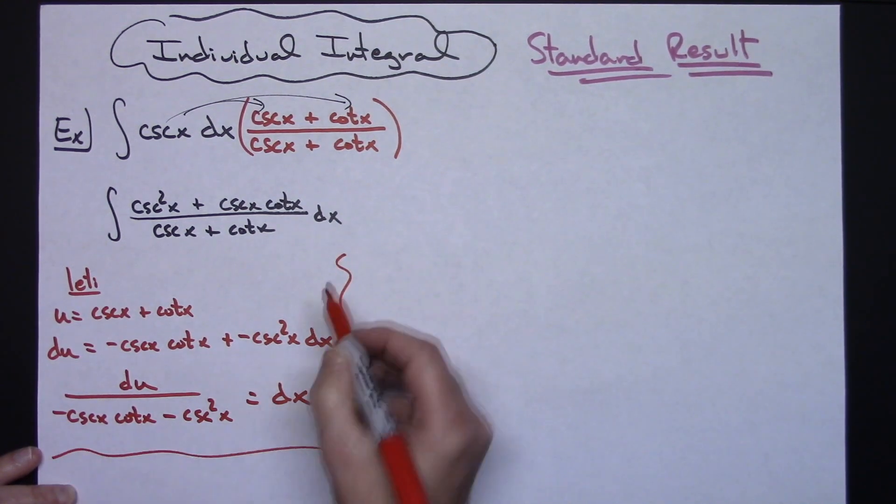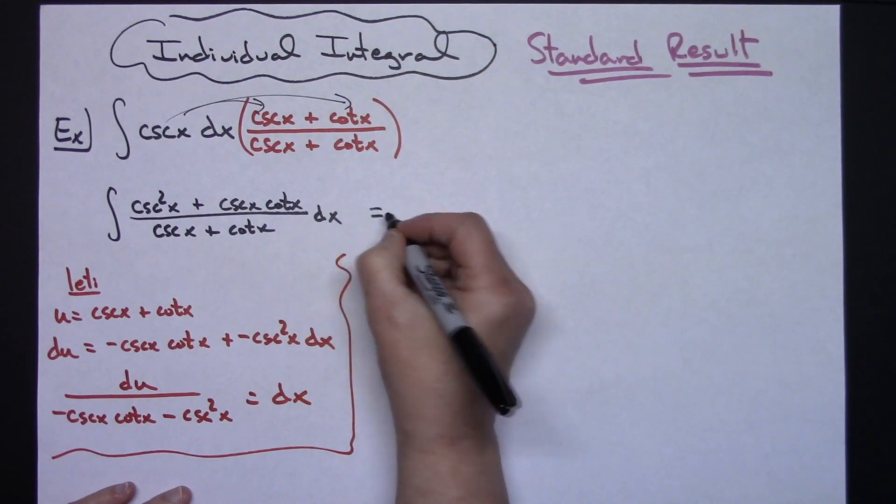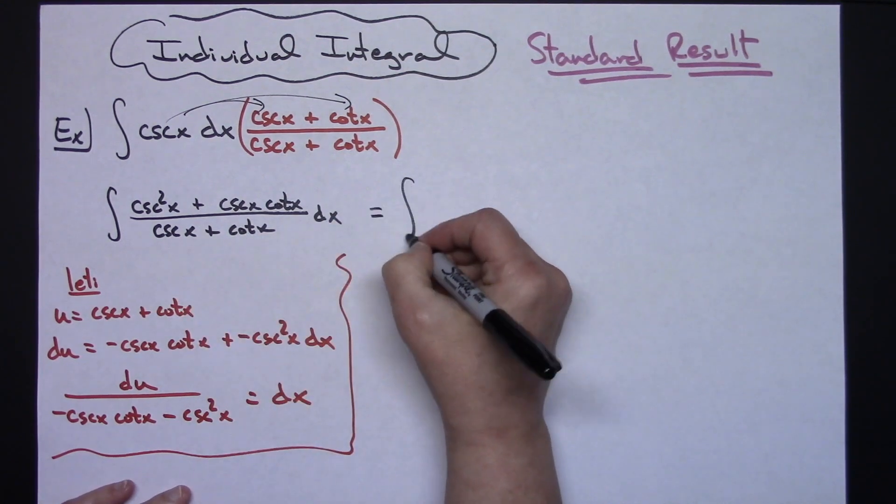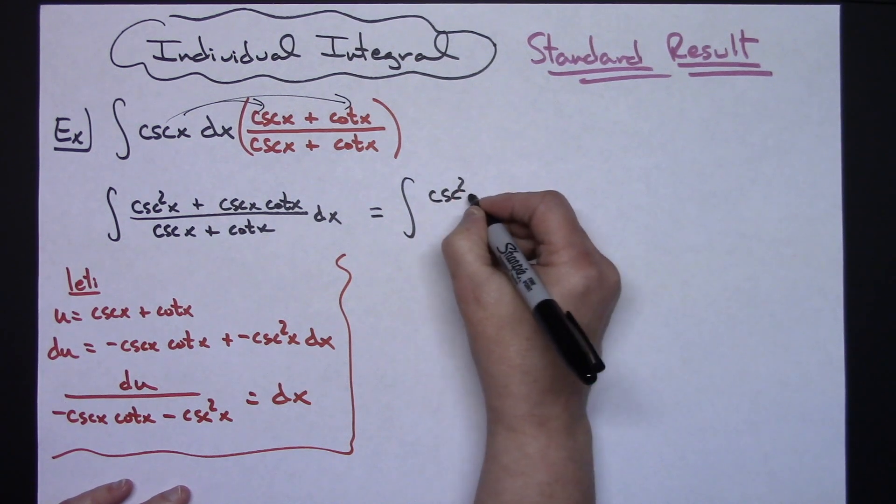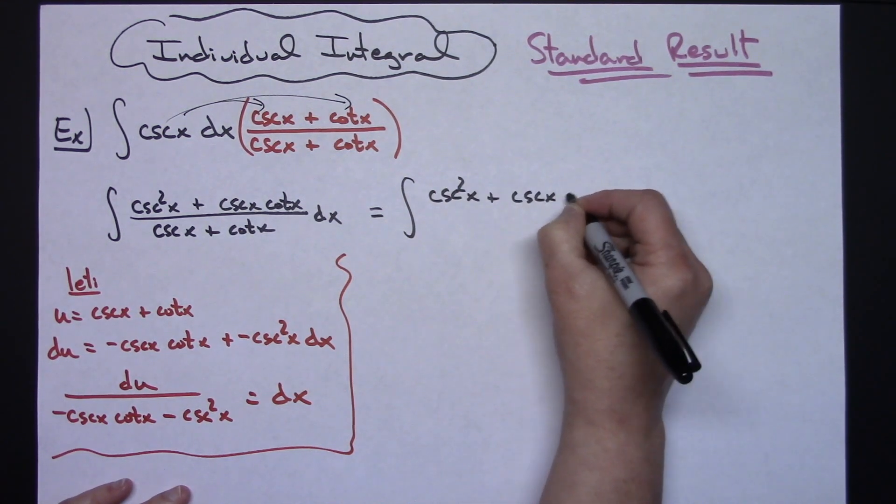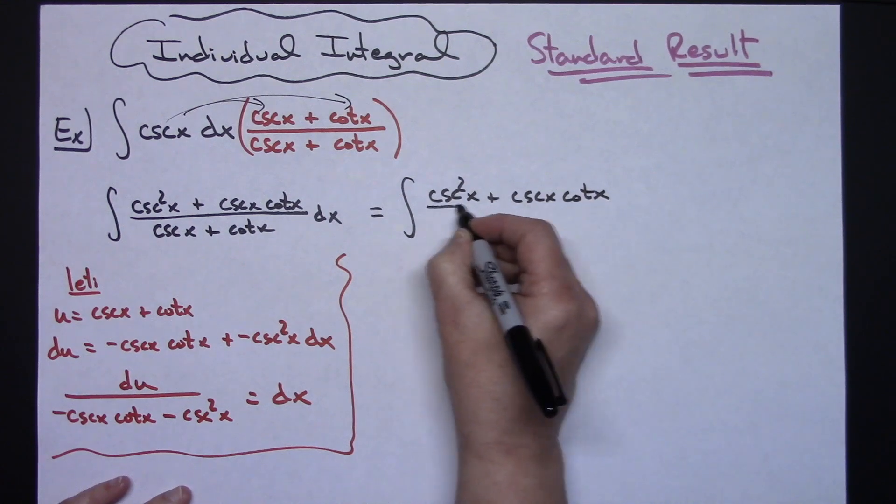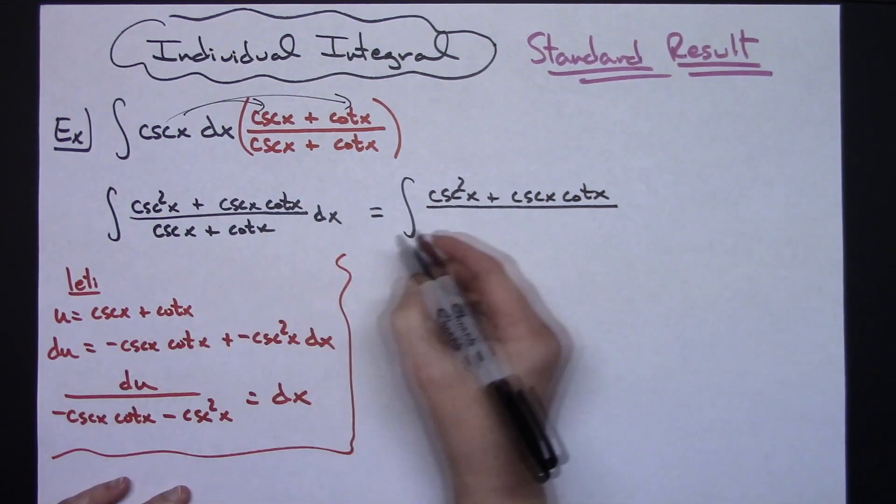From there, we'll come back and do some substitutions. The integral's numerator is still cosecant squared x plus cosecant x cotangent x. The denominator is replaced with u.